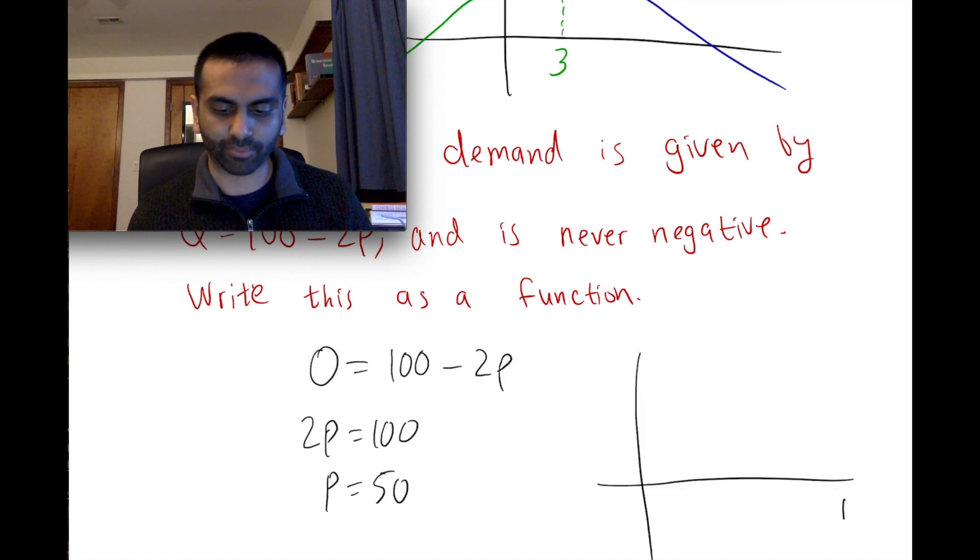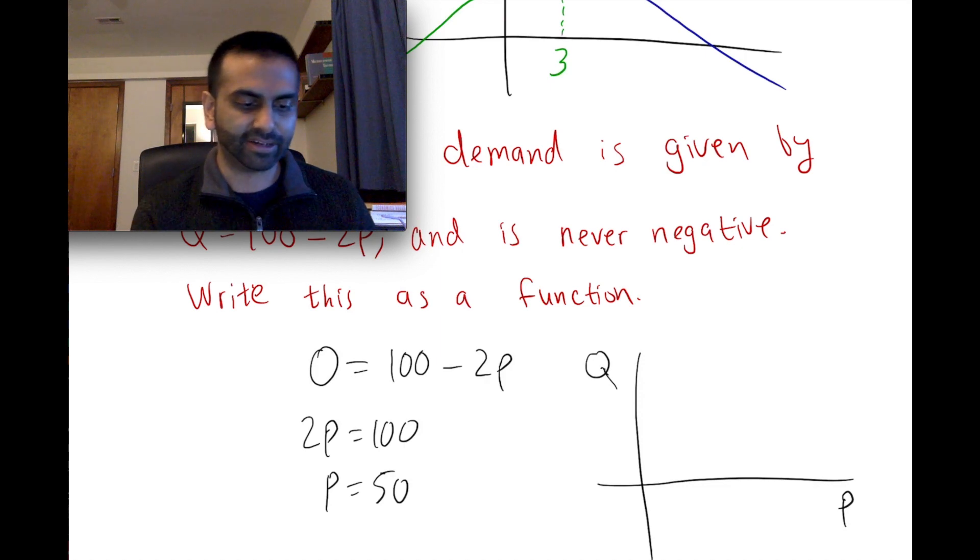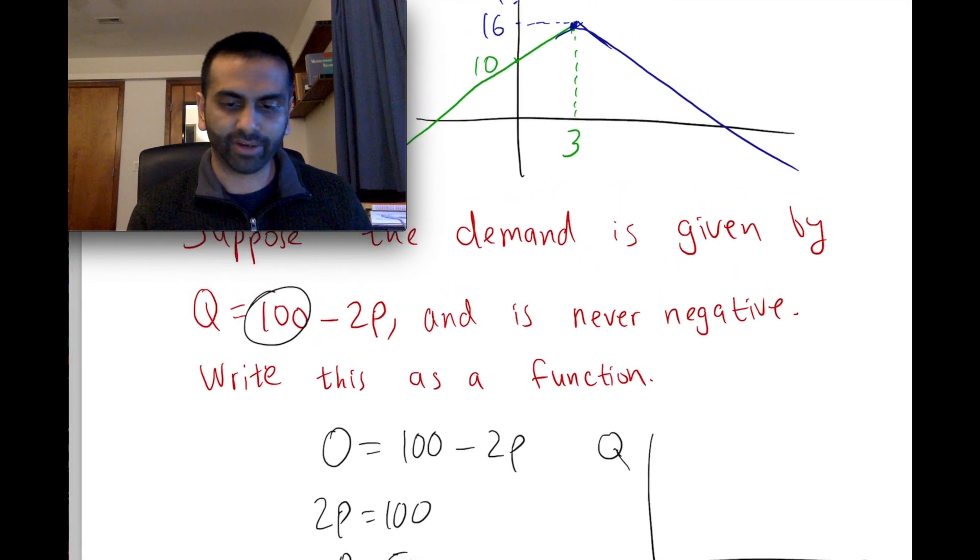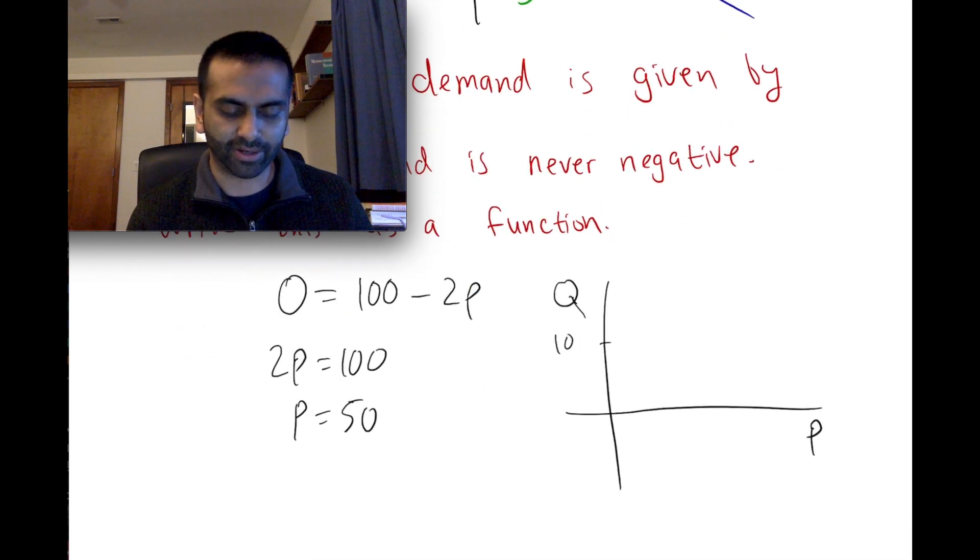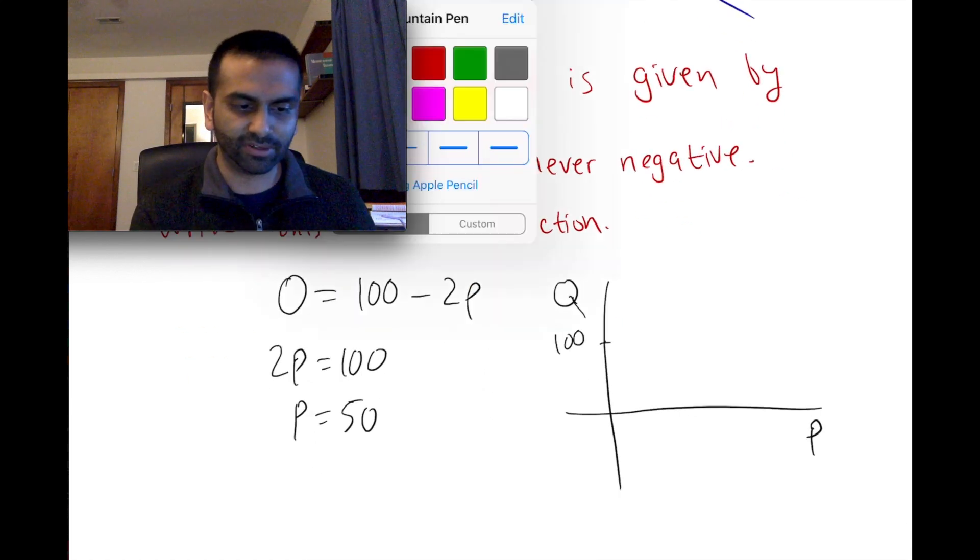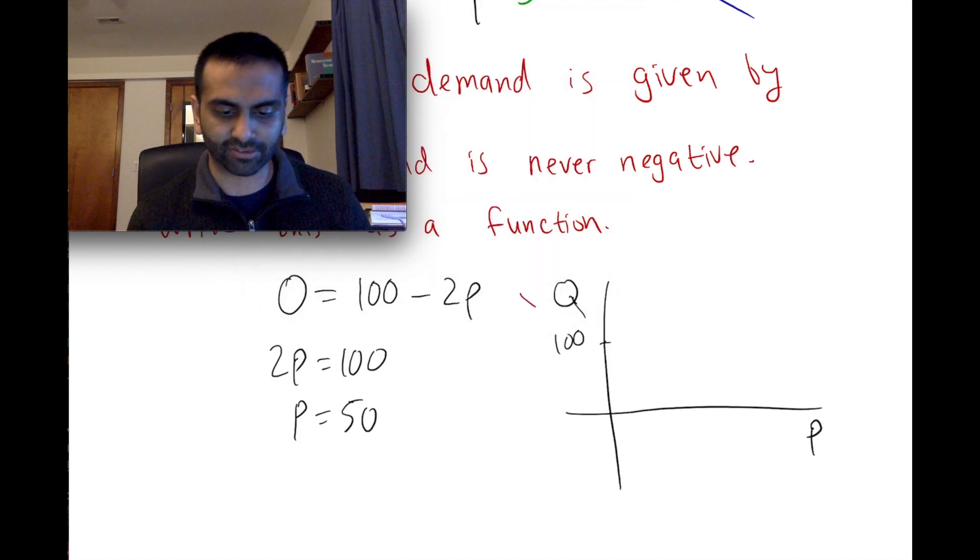So what this means is for this function, if we were to graph price here and quantity demanded here, the intercept here is 100 and the slope is negative 2. So this function looks like this. If this is pure mx plus b, and as we just saw, when the x value of p is 50 here, that is where the quantity is 0.